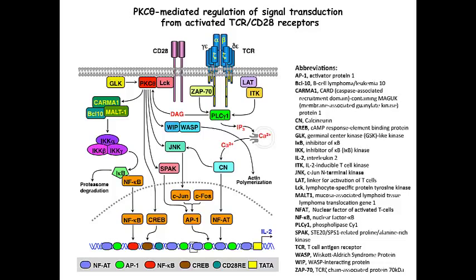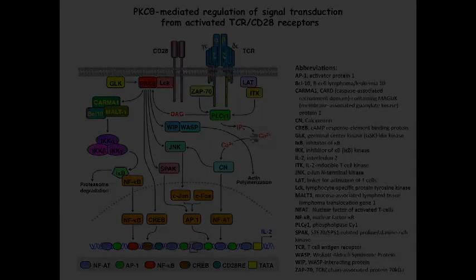Finally, WIP phosphorylation by PKC Theta disengages WASP, which can then interact with and activate the ARP2-3 complex that regulates actin polymerization, leading to reorganization of the cytoskeleton.